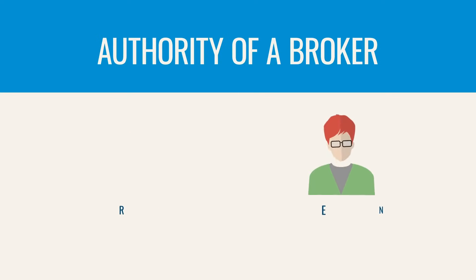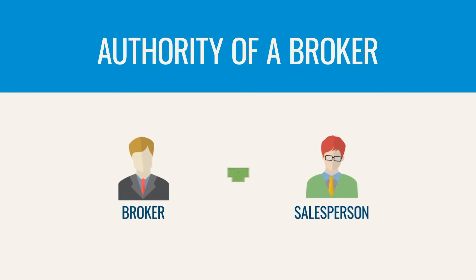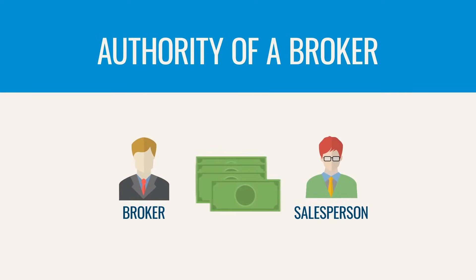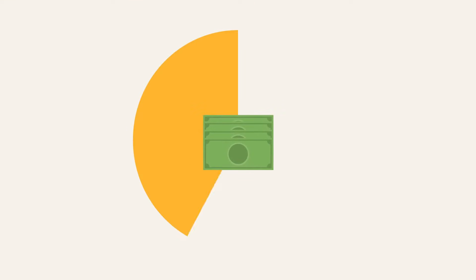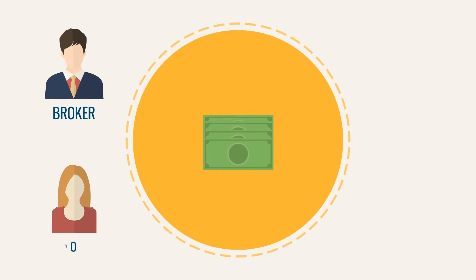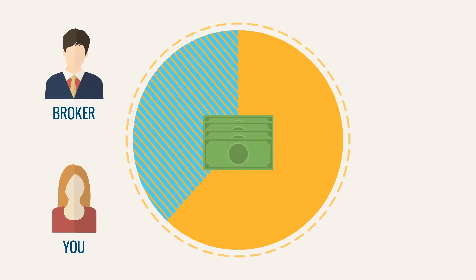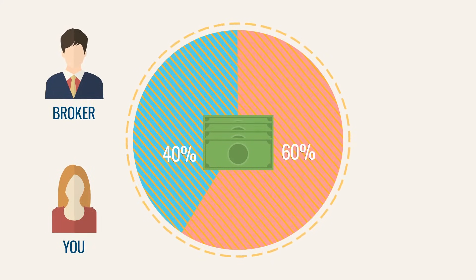Remember that as a salesperson, you'll be working under the authority of a broker. More often than not, your broker will pay you a share of the total commission earned from a sale — this is what we call a split. A split may be expressed in different ways, but splits always add up to 100%. For the next problem, let's use a 60-40 split: 60% going to you and 40% going to the broker.